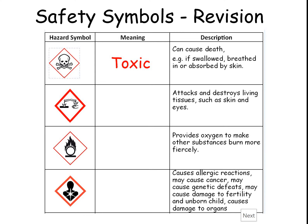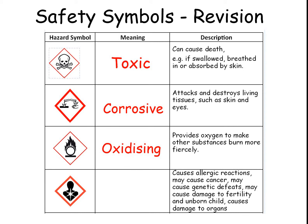Hopefully you've filled all this in. Switch to your other colour pen for making any corrections. The second symbol is very important when talking about acids and alkalis — it means corrosive. It attacks and destroys living tissue such as skin and eyes, and if you look closely, you can see it is also eating through a block of metal. So some acids and alkalis can eat through metal, so you need to be very careful. The O with a flame above it means oxidising — it provides oxygen to make other substances burn more fiercely. The next one down is dangerous to human health or carcinogenic: it causes allergic reactions, may cause cancer, genetic defects, damage to fertility and unborn child, and can cause damage to organs.